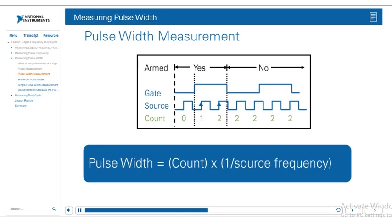The formula for calculating pulse width is the same as that for the period: pulse width equals the number of counts times one over the source frequency. For example, with a source of 100 kHz and two counts, that's 2 times 1 over 100k, which gives us 0.02 milliseconds for our pulse width.